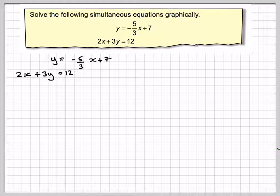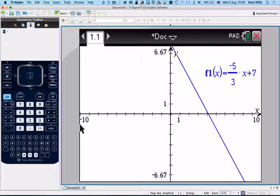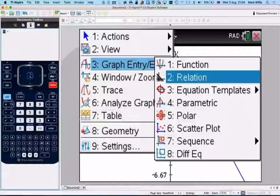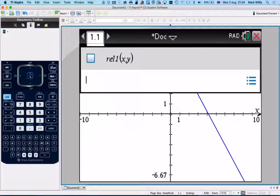The second one, 2x plus 3y is equal to 12, is a relation, so we can't use the function method. In order to enter it, we need to go to menu, graph, entry, edit, and put in relation, and then put in 2x plus 3y is equal to 12.